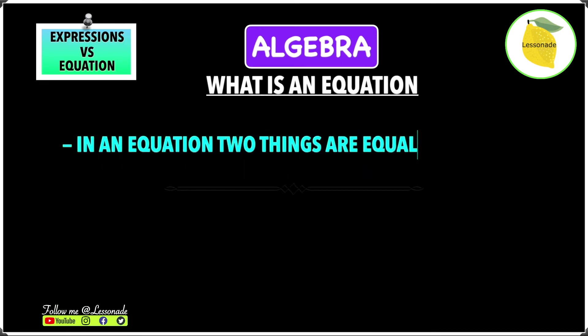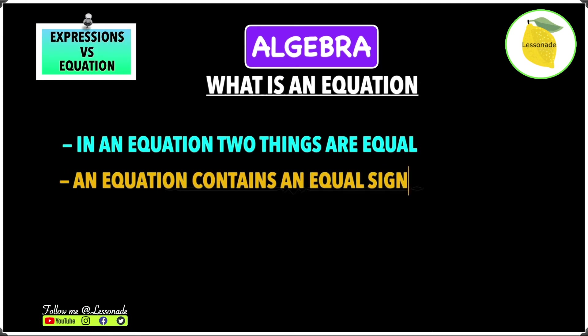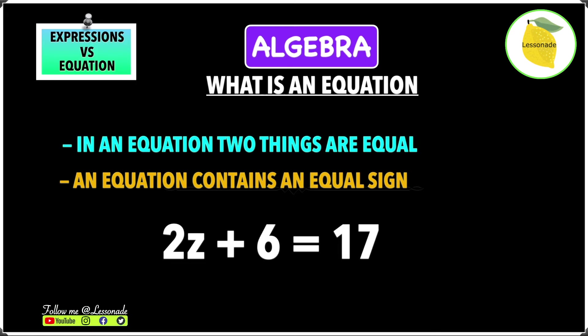In an equation, two things are equal and an equation contains an equal sign. For example, the equation 2z plus 6 equals 17 contains an equal sign, and two things are equal — 2z plus 6 is basically the same as 17.